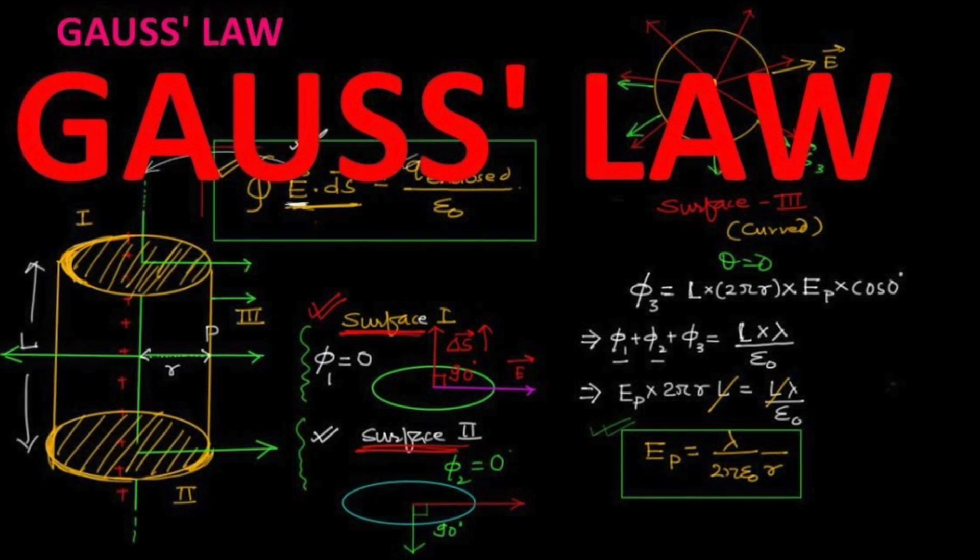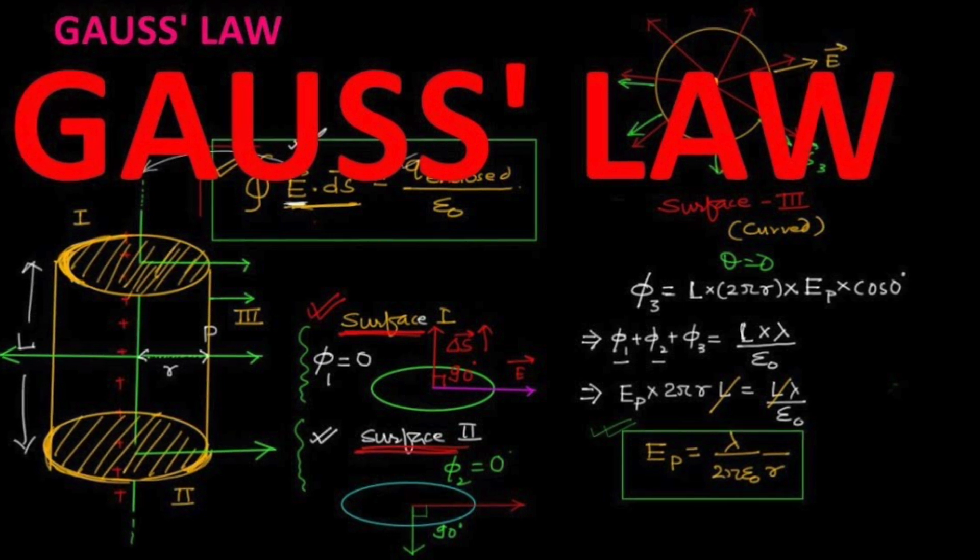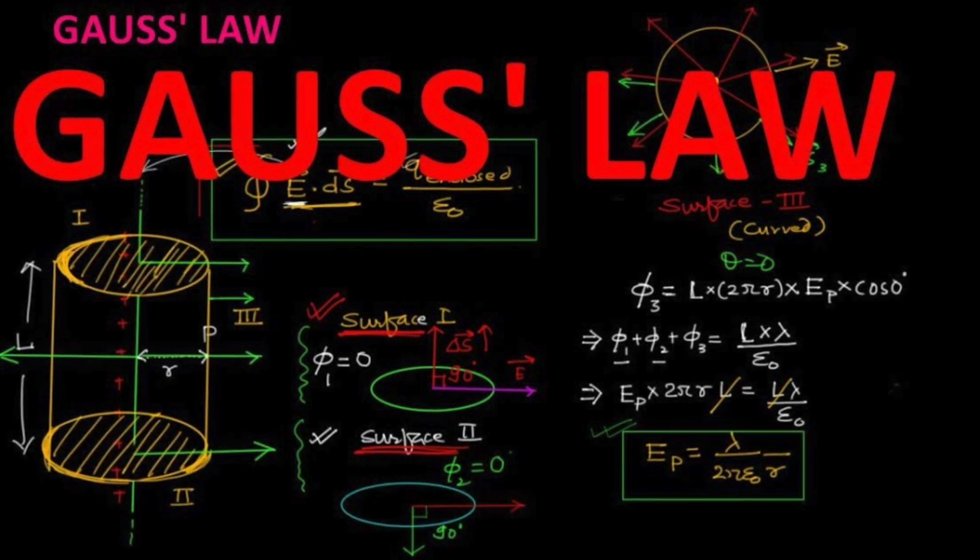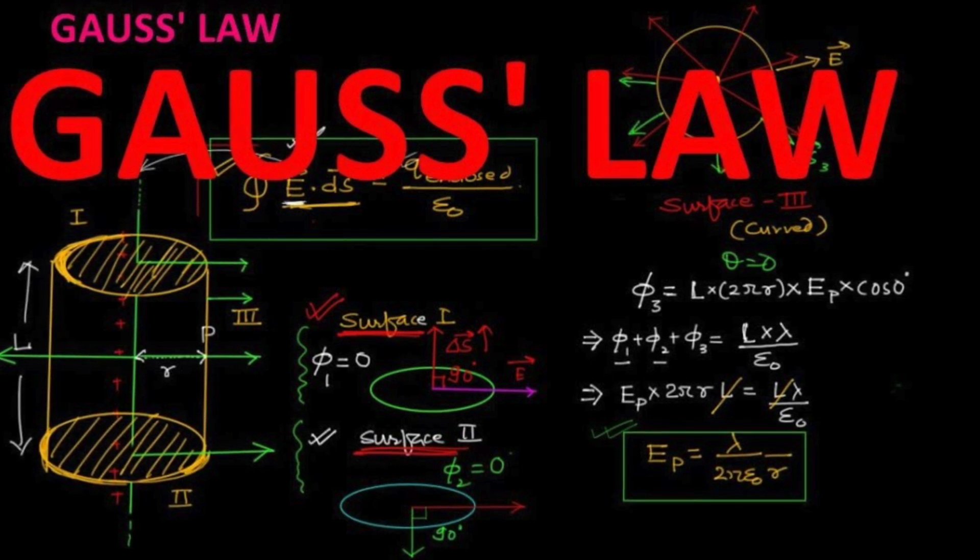If the charge distribution lacks sufficient symmetry for the application of Gauss's law, then the field must be found by assuming the point charge fields of individual charge elements. For example, finite line charge and charge settings, which we'll discuss in further videos.